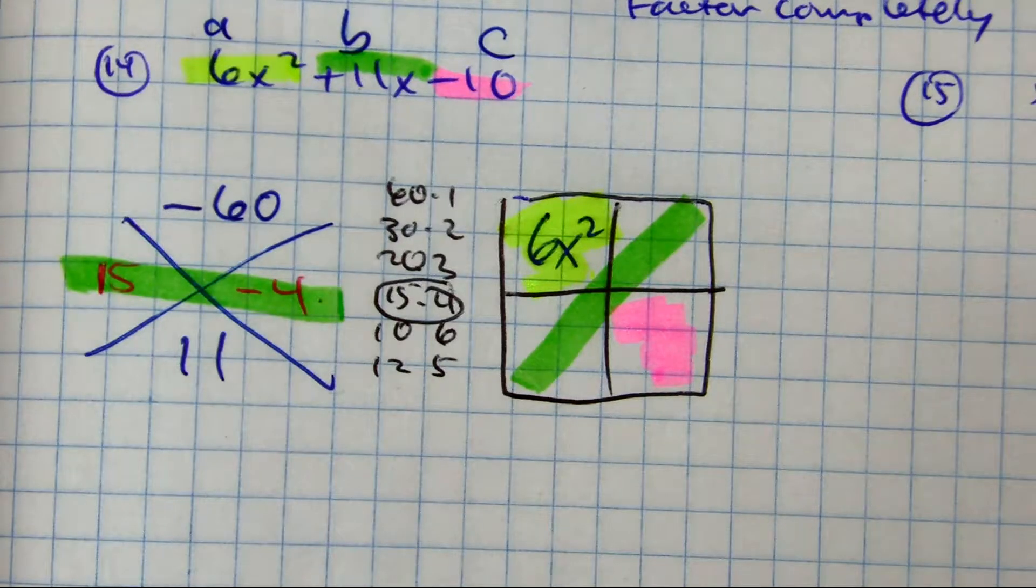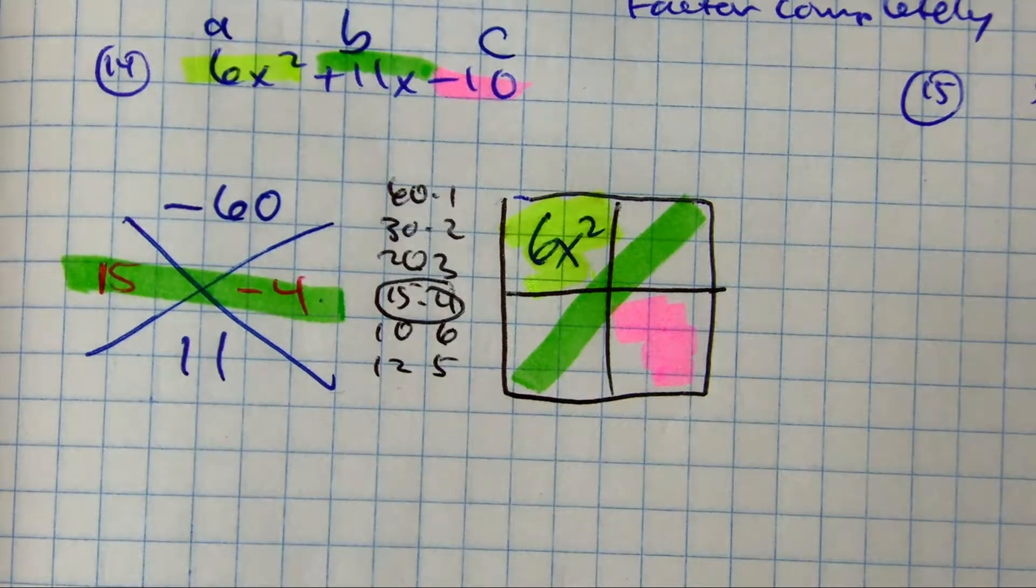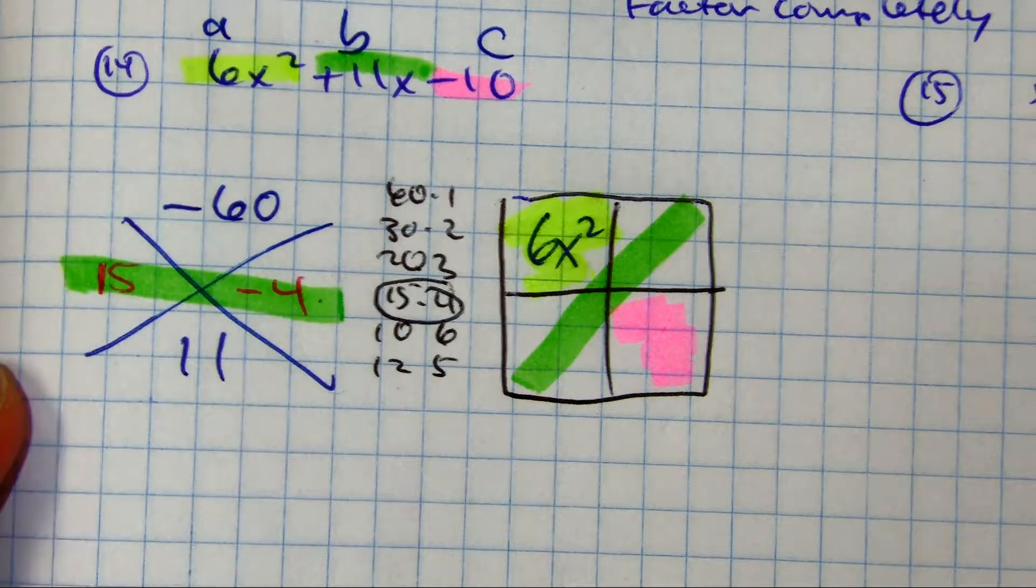And basically what you're doing in the box is factoring by grouping. It actually makes it three terms to four terms, but that makes it factorable.